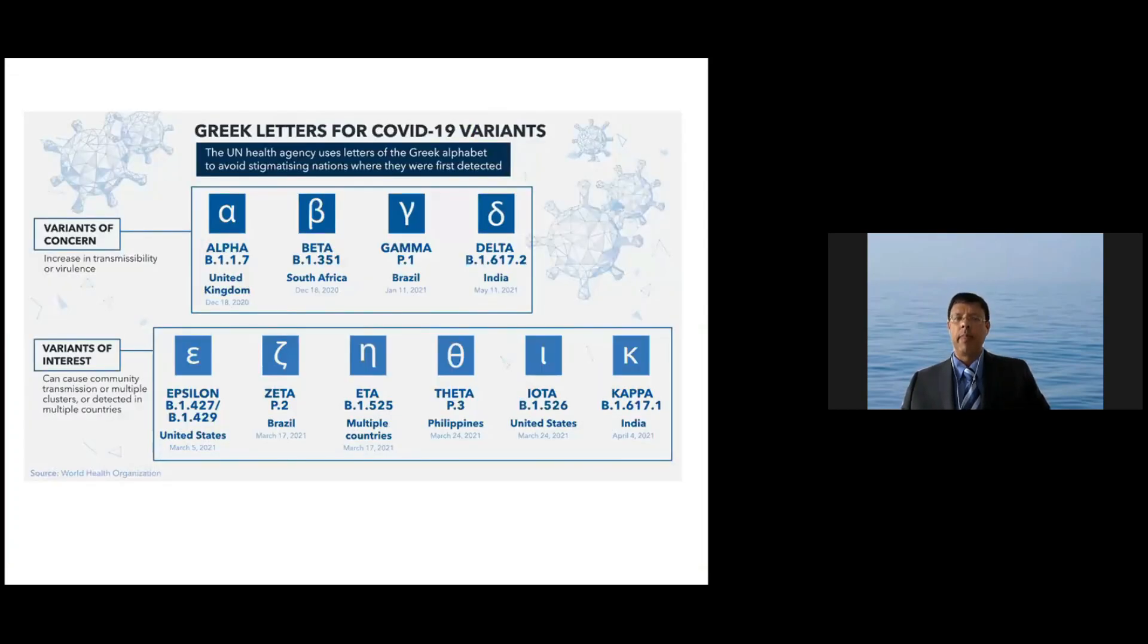So in summary, viral variants have been around for the last few months. The nomenclature was confusing because there were numbers or the place that it originally was seen in. The WHO has used the Greek letters of the Greek alphabet to classify them. The variants of concern in the UK and what WHO has said are alpha, beta, gamma, and delta. Alpha is the original UK variant, beta is the South African variant, gamma is the Brazilian P1 variant, and delta is the sub-variant 2 of the Indian variant. And these are the names that we will be using in future discussions. Thanks a lot.